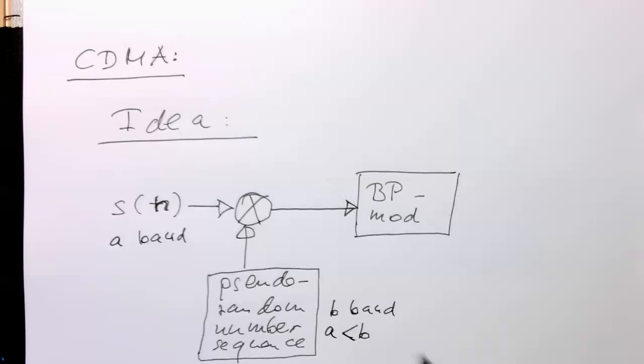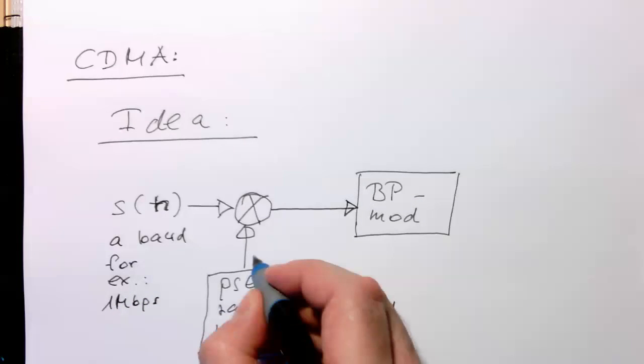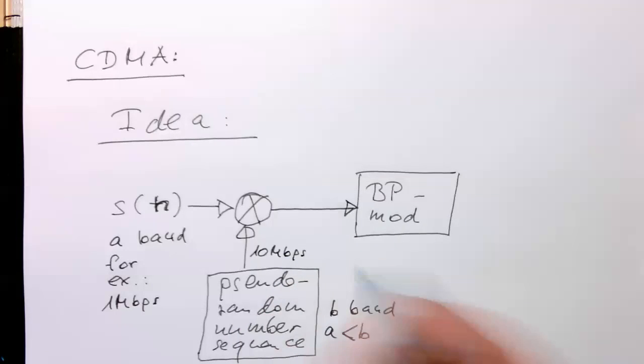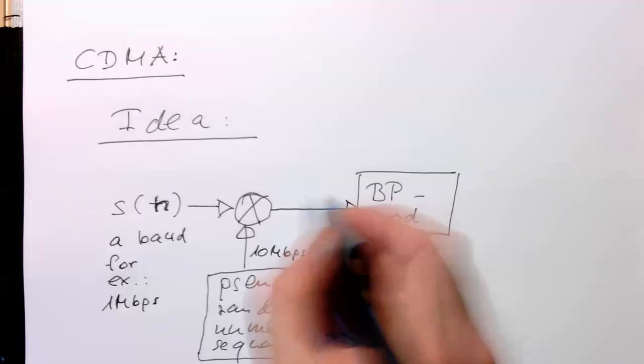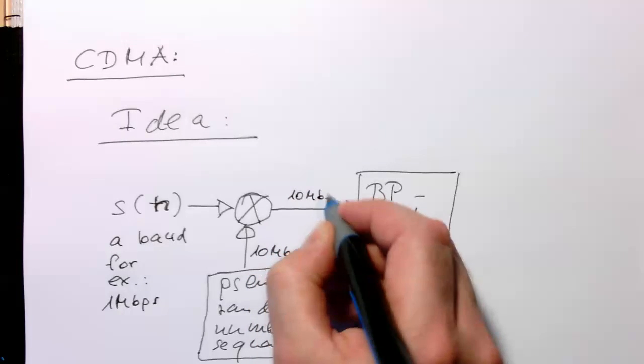So for example, if this is here, one megabit per second. And this one here then is 10 megabit per second. Then also we are getting here out 10 megabit per second.